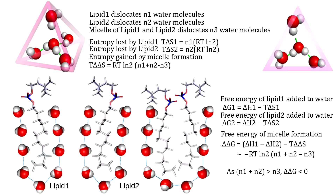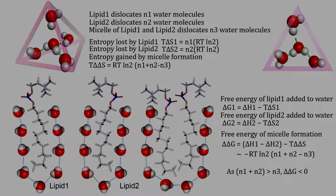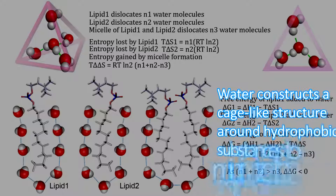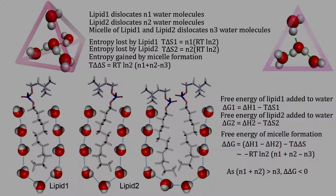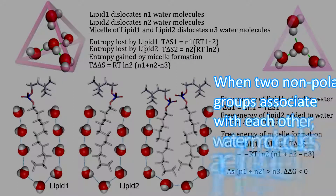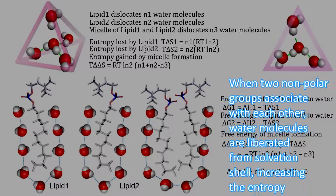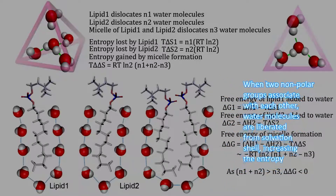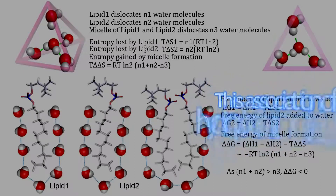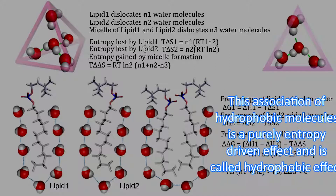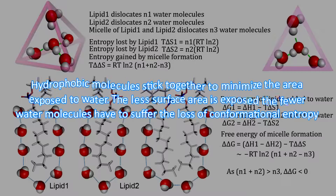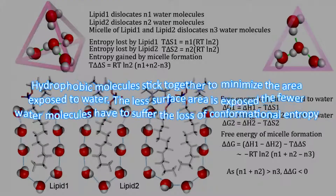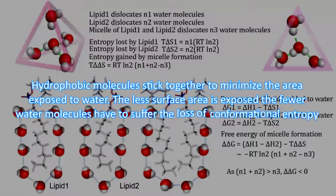How do we interpret this result? Water constructs a cage-like structure around hydrophobic substances to minimize the entropy loss. When two non-polar groups associate with each other, water molecules are liberated from the solvation cage, increasing the entropy. This association of hydrophobic molecules is a purely entropy-driven effect and is called the hydrophobic effect. Hydrophobic molecules stick together to minimize the area exposed to water — the less surface exposed, the fewer water molecules suffer the loss of conformational entropy.